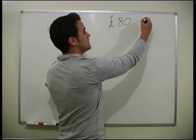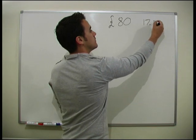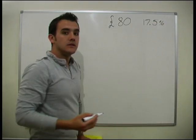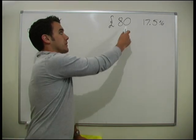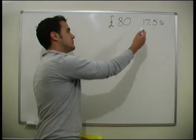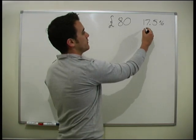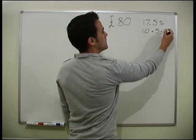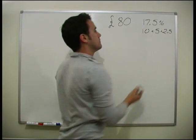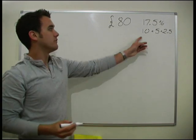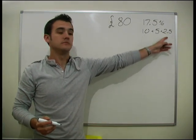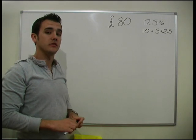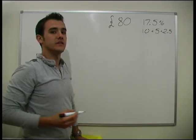VAT is 17.5%, a bit of a tricky one. How do we find 17.5% of 80? Well, 17.5 is just made up of 10 plus 5 plus 2.5. So if we can find 10%, 5%, and 2.5% of 80, we can find out 17.5%. So what's 10% of 80?